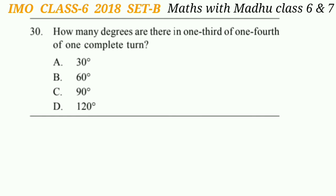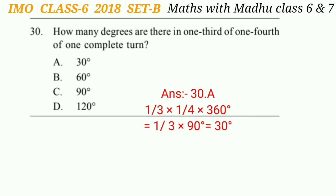Question 30: How many degrees are there in one-third of one-fourth of one complete turn? One complete turn = 360°. One-fourth of 360° = 90°. One-third of 90° = 30°. So the answer is option A — 30 degrees.